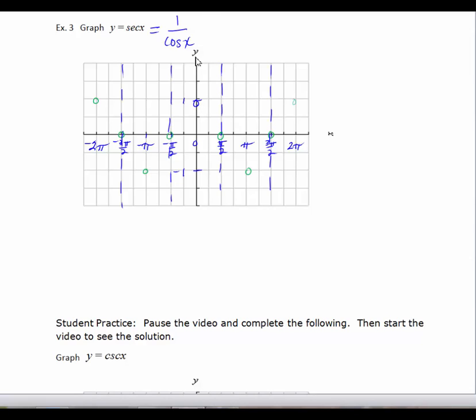Now, remember, I'm taking the reciprocal of every y value that would occur on the cosine function. So the reciprocal of 1 is 1. So where cosine equaled 1, secant is going to equal 1.